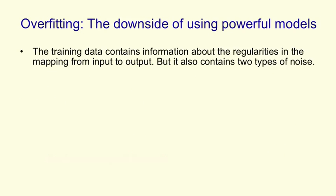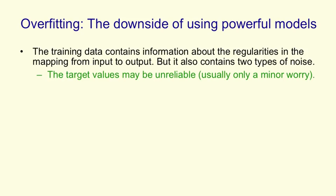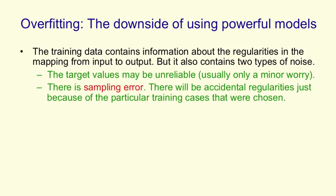The second set of issues is to do with how well the network generalizes to cases it didn't see during training. And the problem here is that the training data contains information about the regularities in the mapping from input to output, but it also contains two types of noise. The first type of noise is that the target values may be unreliable. And for neural nets, that's usually only a minor worry. The second type of noise is the sampling error. If we take any particular training set, especially if it's a small one, there'll be accidental regularities that are caused by the particular cases that we chose.